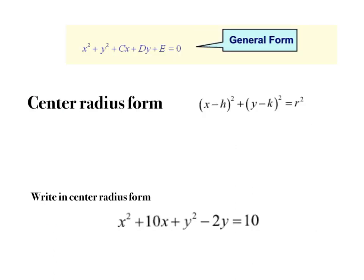Now they start to get a little tougher. We have two forms of a circle. The first is called the general form — and immediately you should be able to tell it's not a function because there is a y squared term. The second is called center-radius form, the form we've been looking at, where you can quickly see the center and the radius.